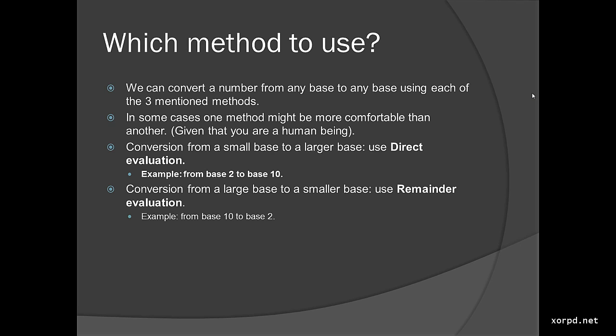A computer could do every one of those methods in any case and is still going to stay happy. Some tips about which methods to use in any case. Whenever you are converting from a small base to a larger base, I recommend to use the direct evaluation. For example, whenever you are trying to convert from base 2 to base 10 — we actually did this in this lesson already. This is the case for direct evaluation.